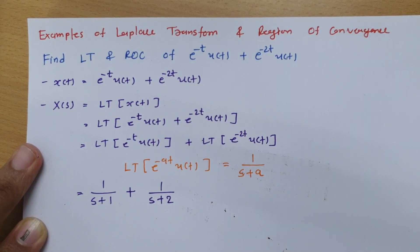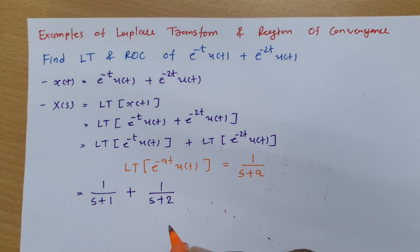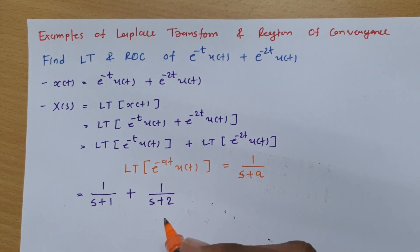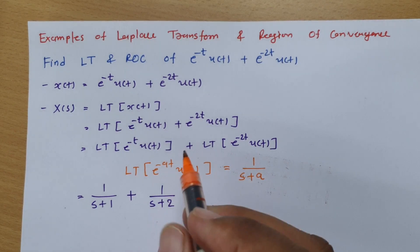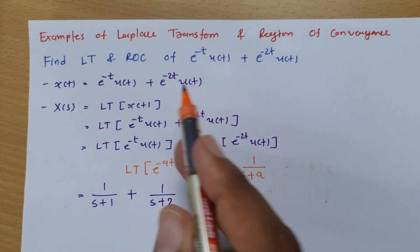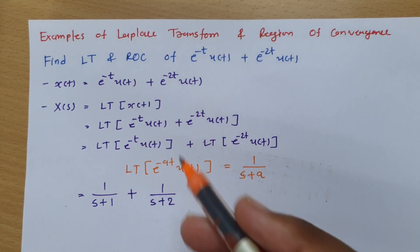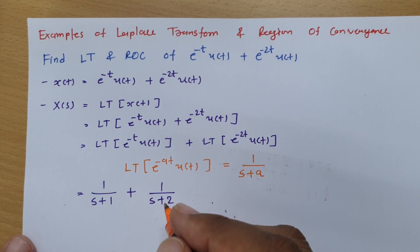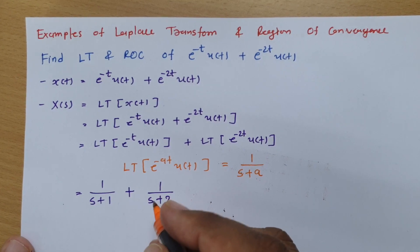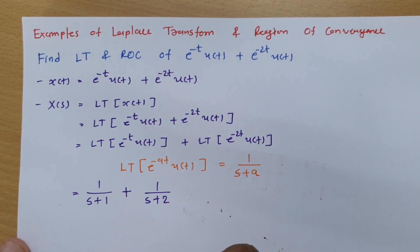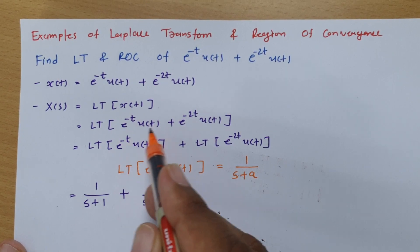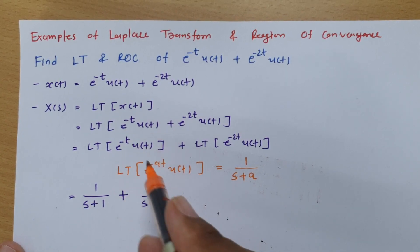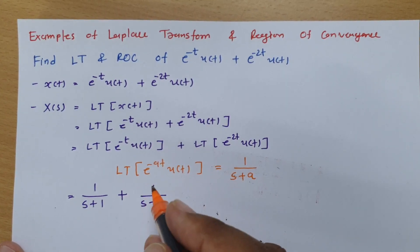Now we have the Laplace transform of both terms. The question also asks for the region of convergence, so we need to determine whether each signal is a left-sided or right-sided signal.